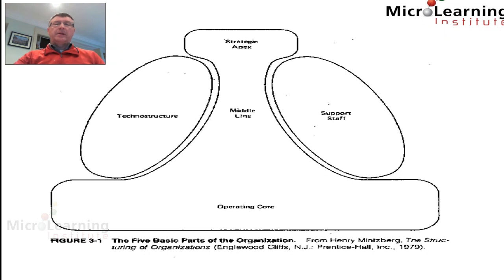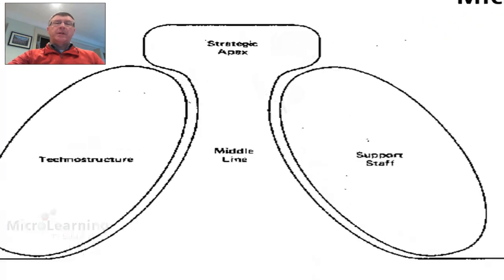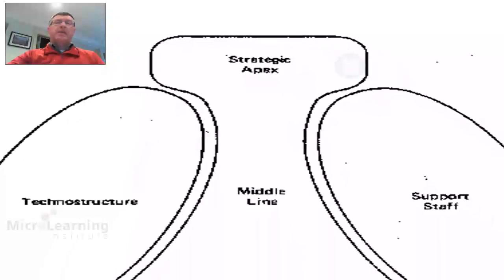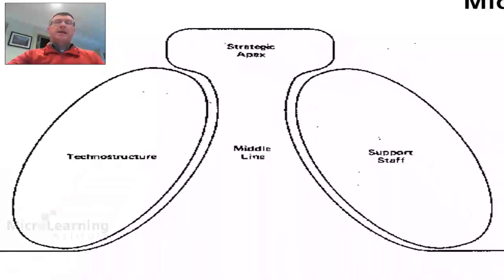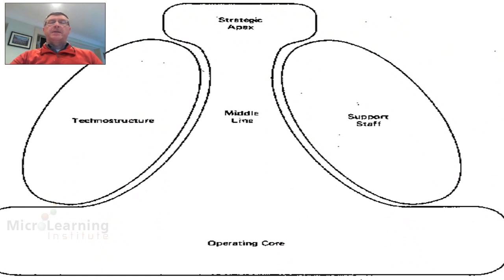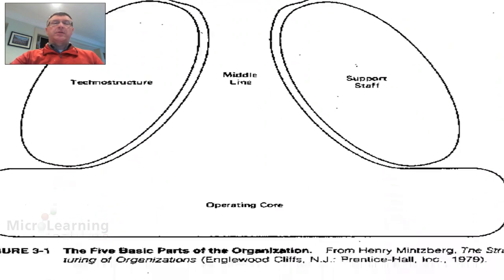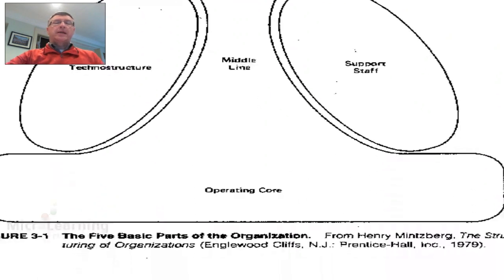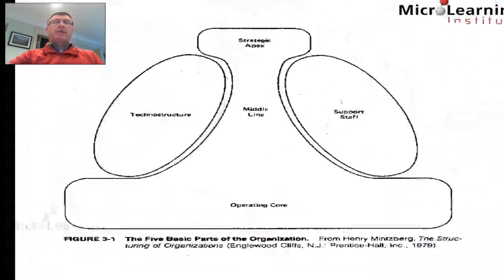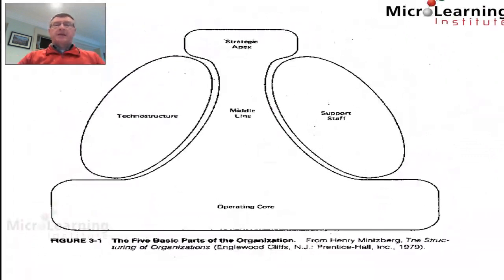Here we have the model. We can see that at the top of the organization we have what Mintzberg calls the strategic apex, and then through the organization we have the middle line, supported by the support staff and the technostructure.